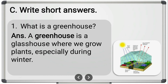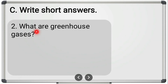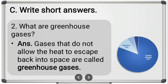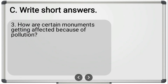Second short answer question: 'What are greenhouse gases?' Gases that do not allow the heat to escape back into space are called greenhouse gases. Remember that these gases result in global warming — temperature is rising because these gases are not allowing heat to escape. Examples include carbon dioxide, methane, and others.